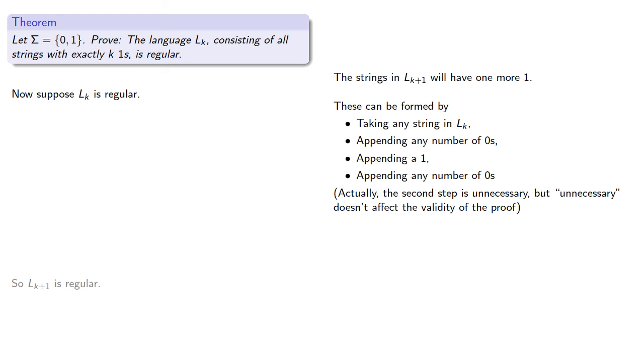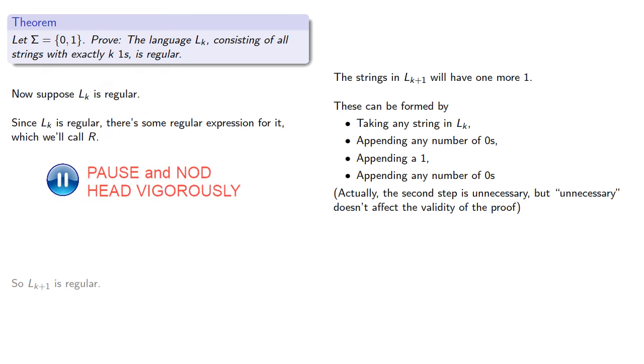Now since Lk is regular by assumption, there's some regular expression for it, which we'll call R. Then Lk plus 1 is going to be R, any number of zeros, a one, and then any number of zeros.